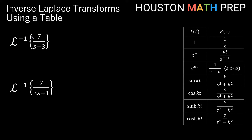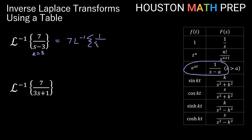Our next one: inverse transform of 7 over s minus 3. We'll be using the e to the at formula — in this case a is equal to 3. I bump the 7 out front since the formula has a 1 on top. So that's 7 times the inverse transform of 1 over s minus 3. With a equals 3, that gives us 7 times e to the 3t.